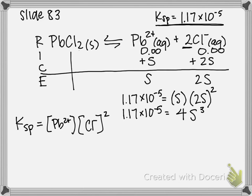So now, if I want to get S by itself, I can divide both sides by 4. And additionally, to get rid of the cubed, I can take the cubed root.